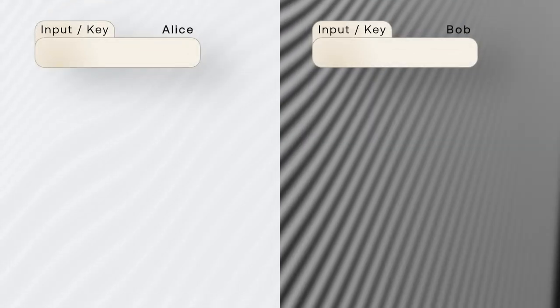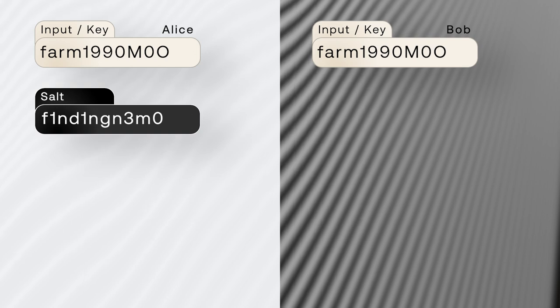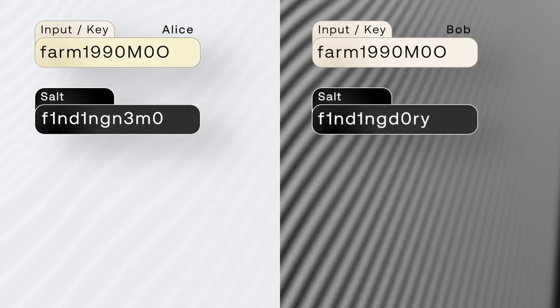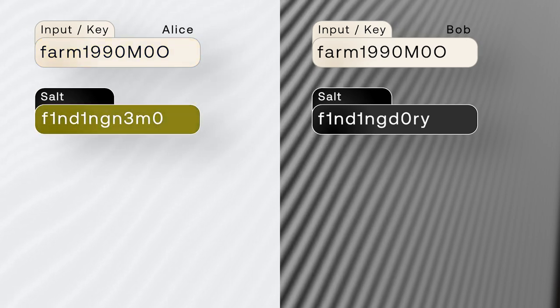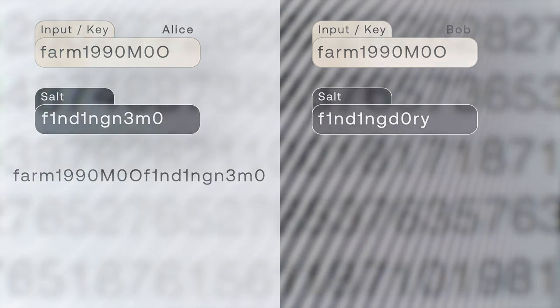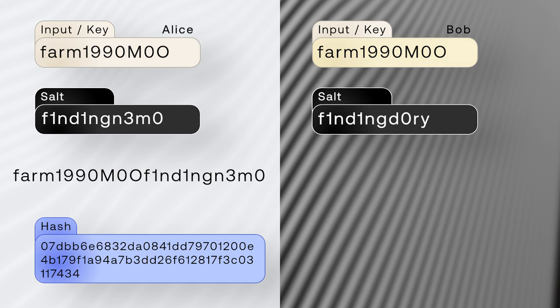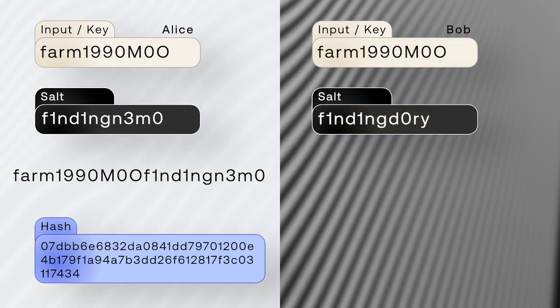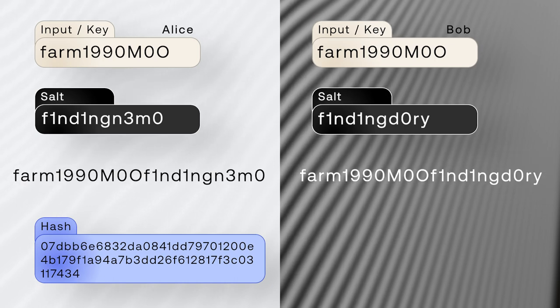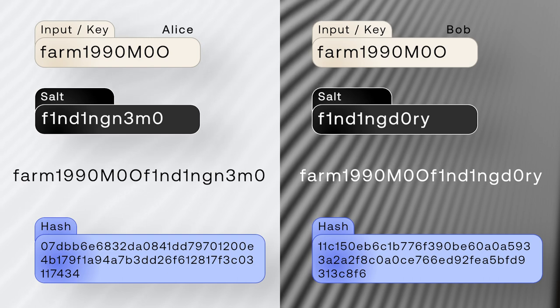Let's visualize this through an example. Say Alice and Bob both use the password "FORM1990MOO." For Alice, we'll use "FINDINGNEMO" as the salt, so the salted input is "FORM1990MOO FINDINGNEMO," and running it through the hash function produces one hash result. For Bob, same password, but his salt is "FINDINGDORIE," so the salted input is "FORM1990MOO FINDINGDORIE," producing a completely different hash result. Different users, same password, different salts, different hashes — so someone looking at the full list of hashed passwords would not be able to tell that Alice and Bob used the same password.